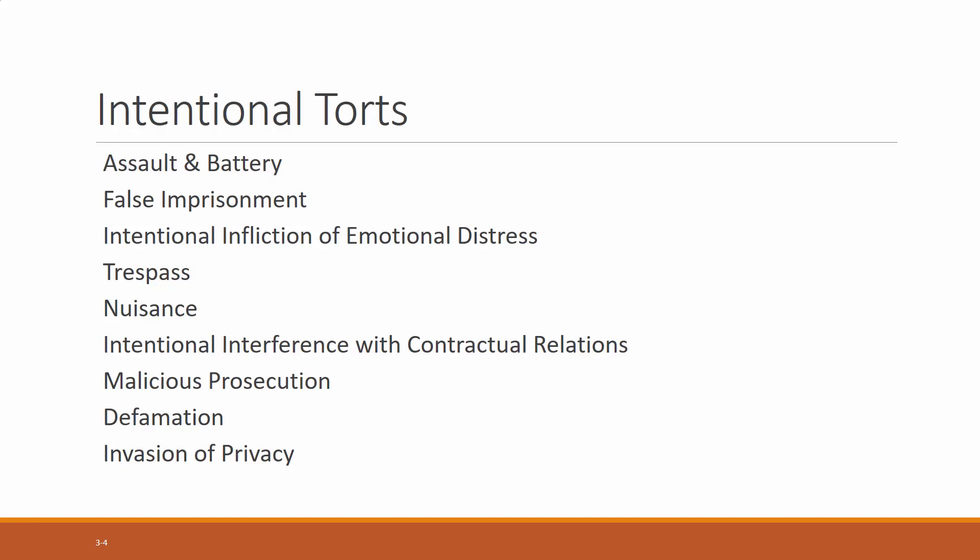Intentional interference with contractual relations means other people had a contract and you messed with it in a way that damaged one of the parties. Say you had an agreement to pay someone $5 per item, and I come in and offer you $100 if you agree not to sell to her — I've interfered with an existing contract. If I offered to compensate both parties and buy out the contract, that's totally legal. But if I try to induce you out of the contract without compensating the other party, that's intentional interference with contractual relations.